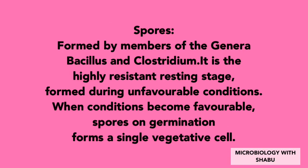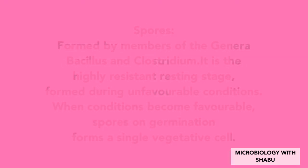Spores are formed by members of the genera Bacillus and Clostridium. They are the highly resistant resting stage formed during unfavorable conditions. When conditions become favorable, spores germinate to produce vegetative cells.